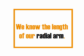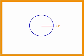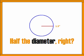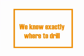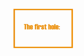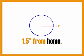It's going to take some measurement on our part, but it's really pretty easy to get started. We know the length of our radial arm — we're dealing with a one-and-a-half inch radius based on our three-inch diameter circle, since the radius is half the diameter. So we know exactly where to drill the first hole — a half inch from home.